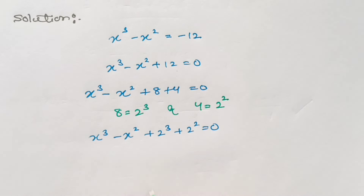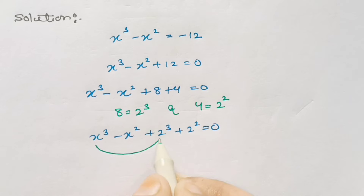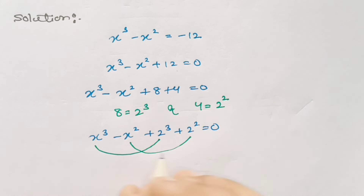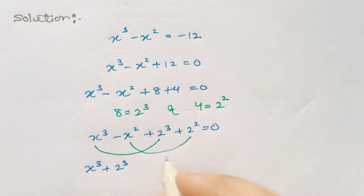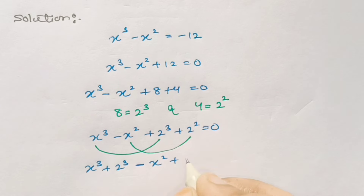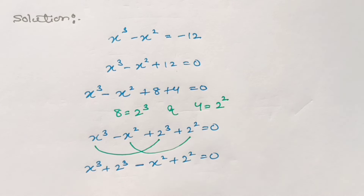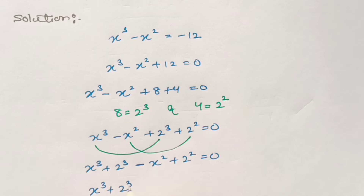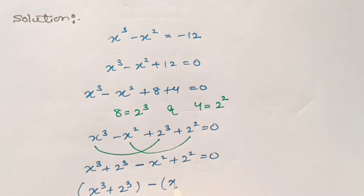In the next step, make a pair of x cubed and 2 cubed, and x squared and 2 squared. So we can write this as x cubed plus 2 cubed minus x squared plus 2 squared, which equals 0. This can be written as x cubed plus 2 cubed, then taking a negative sign common, giving minus x squared minus 2 squared is equal to 0.